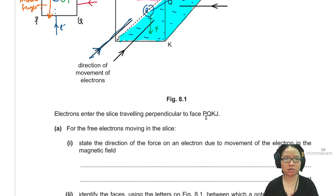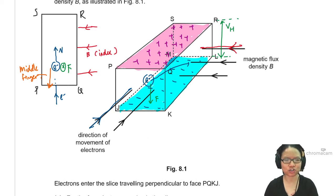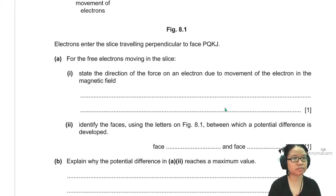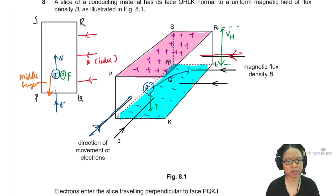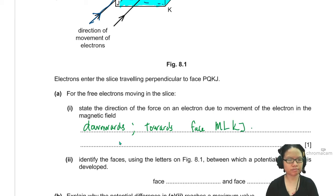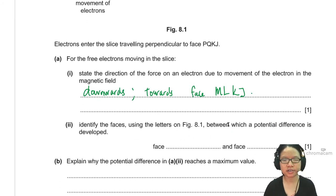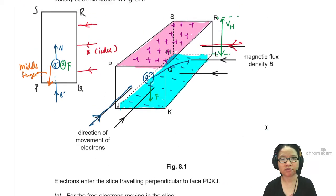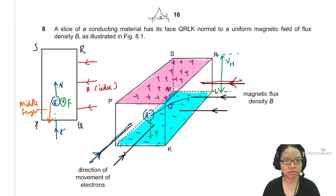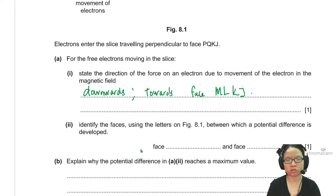Using the Fleming's left hand is very important because it allows you to decide where the electron will drift. So use your fingers and your hands to see that the electrons will go downwards. So the direction of the force - can you say down? I would feel safer if I say towards the face of MLJK. In this orientation, down is probably also acceptable. So you could say just to cover all your bases downwards towards the face MLJK. Identify the faces between which the potential difference is developed. The faces between the potential difference are PQSR and MLJK.